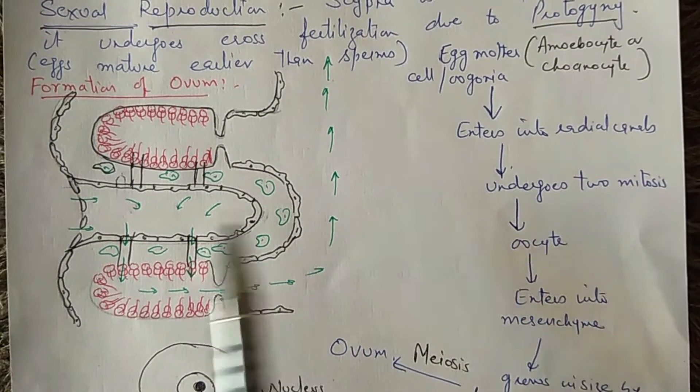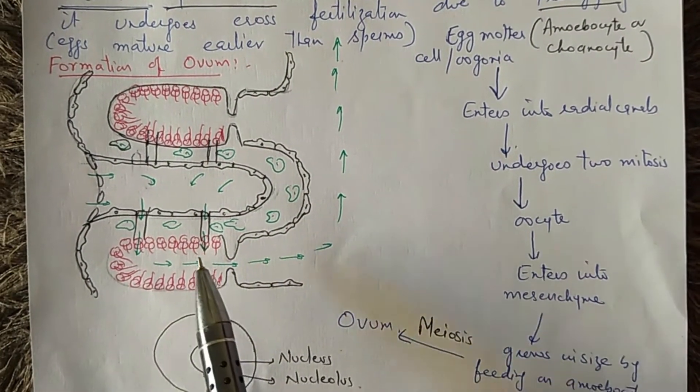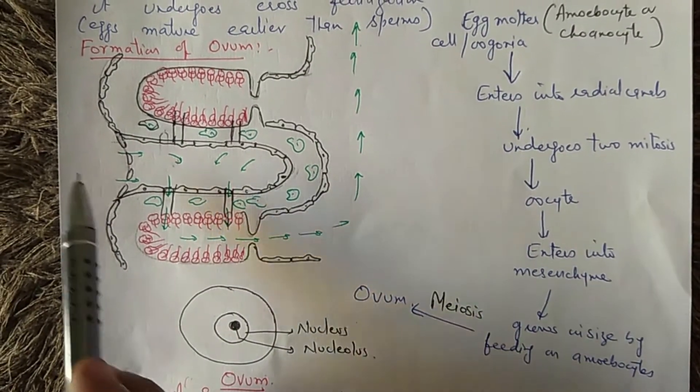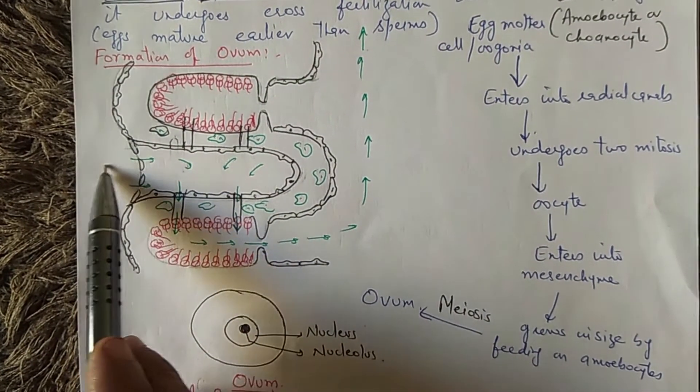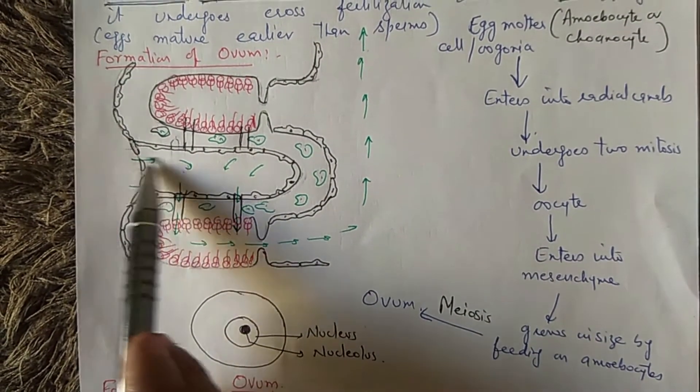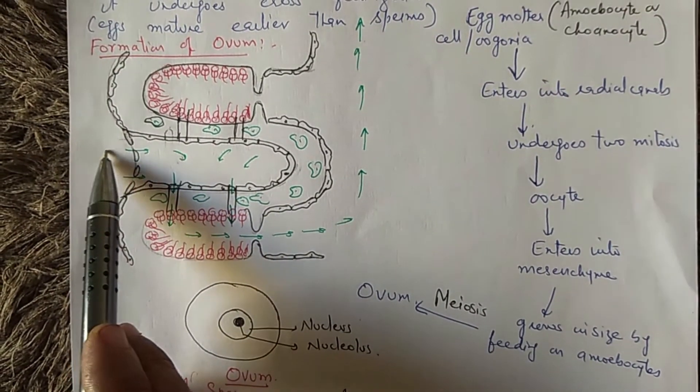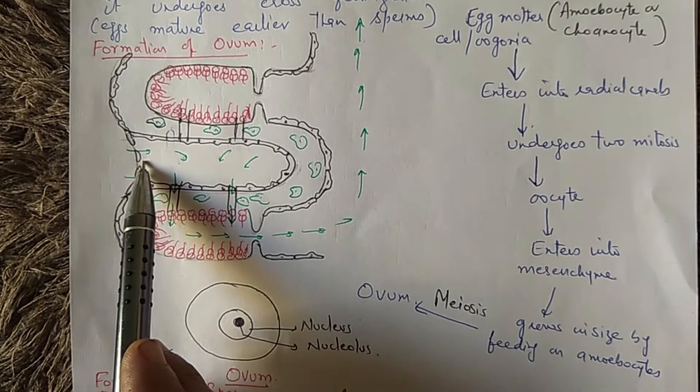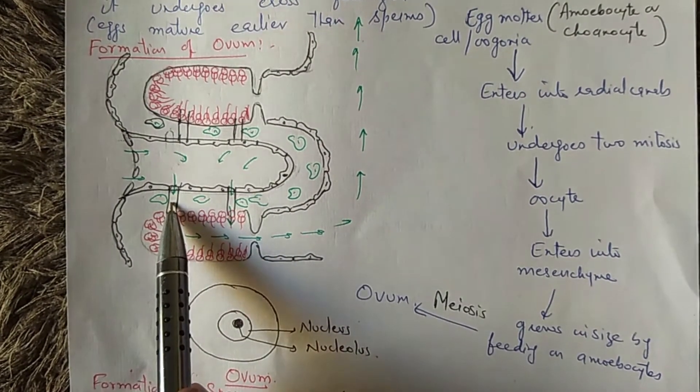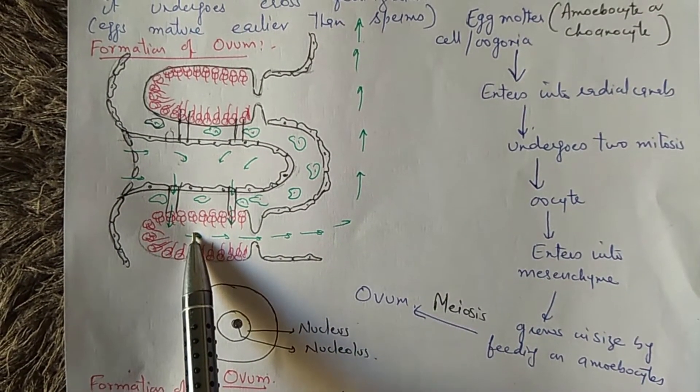And the sperms of some other mature animal will enter into the body of scypha through incoming water current. Incoming water current will enter through the dermal ostia, into incurrent canal, through prosopyle, and enters into radial canals.